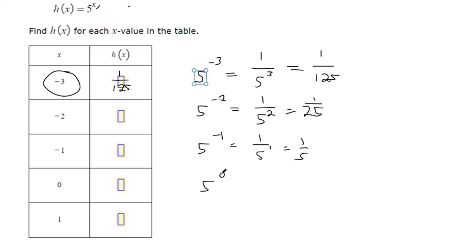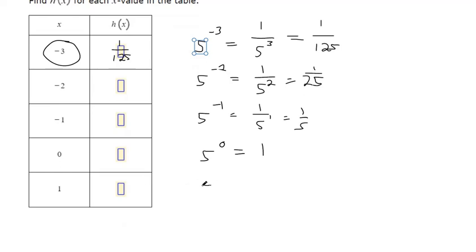For the 0, that just means we plug in 0 in for x. So, any number to the 0 power is 1. And then after that, when x is 1, it's just 5.